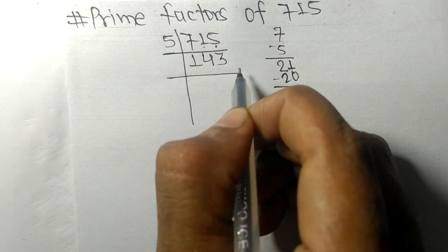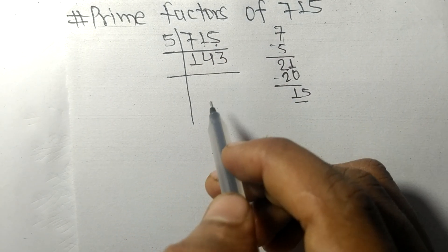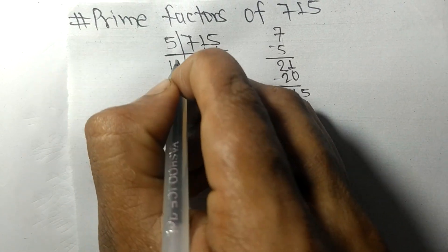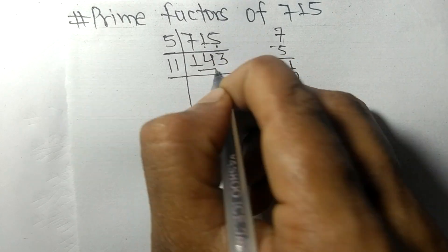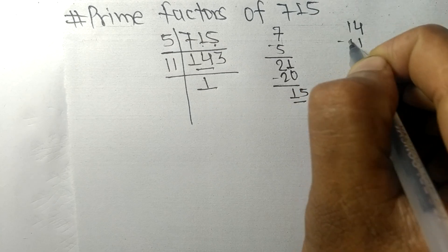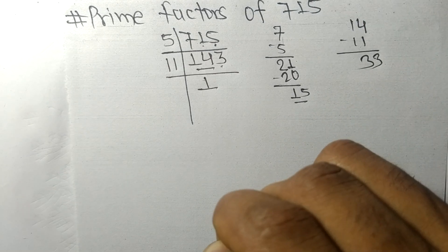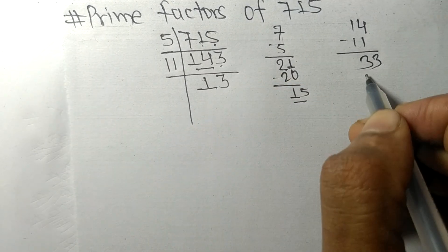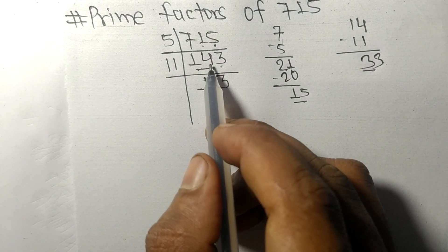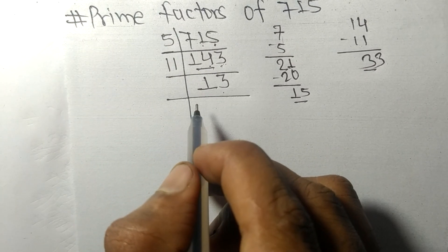Now 143 is exactly divisible by 11. Here we have 14: 11 times 1 is 11, remainder 3; and this 3 becomes 33, so 11 times 3 is 33. So on dividing 143 by 11 we get 13. Now 13 is a prime number.